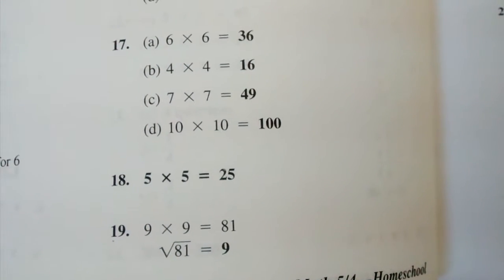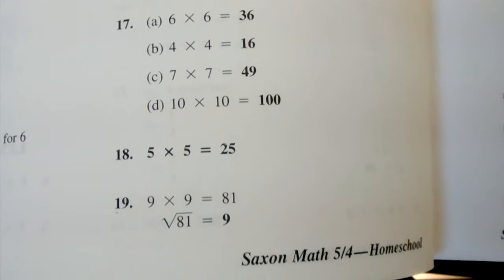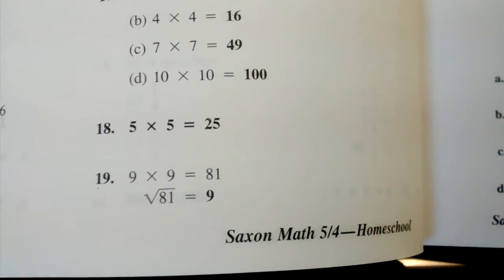Number 18, 5 times 5 equals 25. Number 19, 9.